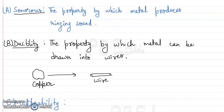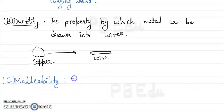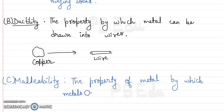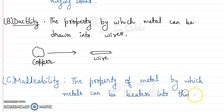The next property is malleability. Malleability is also a property of metals — it is the property by which metals can be beaten into thin sheets.